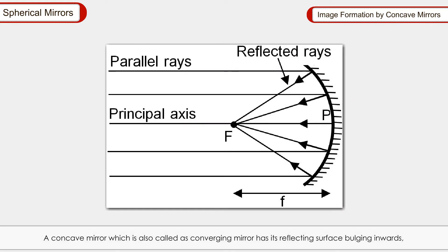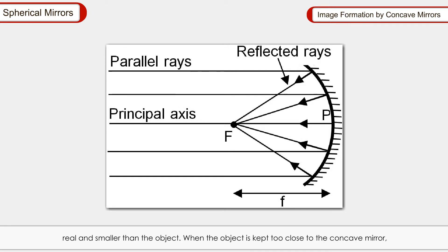Image formed by concave mirrors: A concave mirror, also called a converging mirror, has its reflecting surface bulging inwards, away from the incident light. The image is usually inverted, real, and smaller than the object. However, when the object is kept too close to the concave mirror, the image is erect, virtual, and larger than the object.